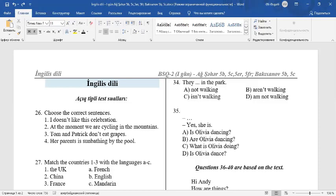Choose the correct sentences. 1. I doesn't like this celebration. It's an incorrect sentence. To make a negative sentence in present simple, we use don't after I. I don't like this celebration. 2. At the moment, we are cycling in the mountains. It's a correct sentence. At the moment is the signal word of present continuous tense form. We use subject plus are plus verb ING.